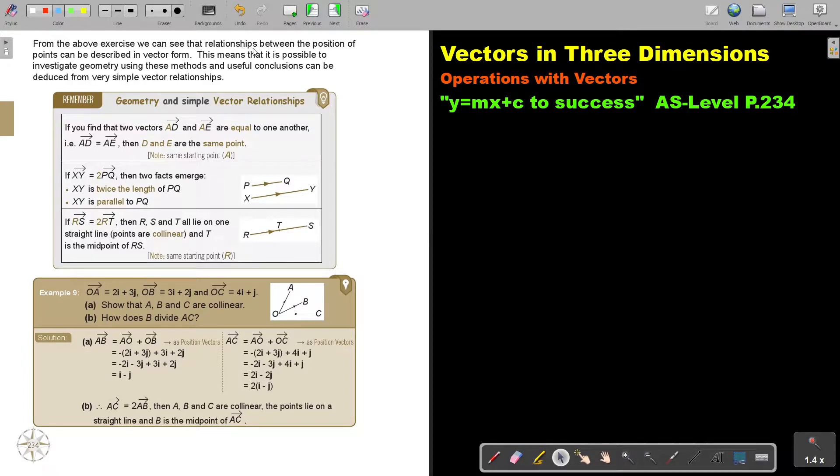we can see that relationships between the position of points can be described in vector form. This means that it is possible to investigate geometry using these methods and useful conclusions can be deduced from very simple vector relationships. Let's look at geometry and simple vector relationships.